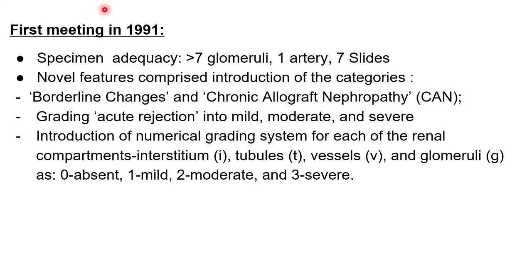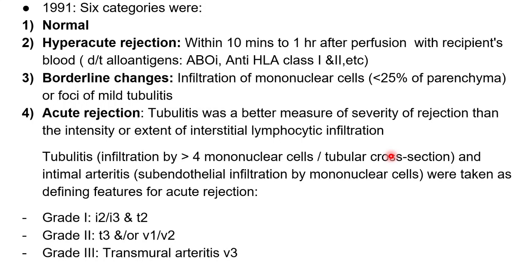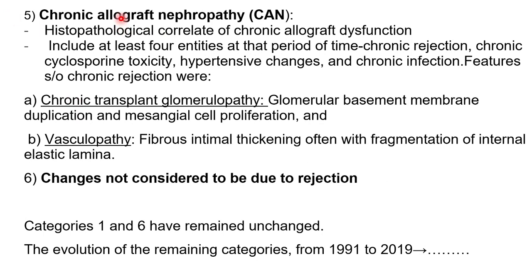Regarding the first Banff meeting, if you know the answers to these updates there is a high chance you will get a better score in the exam. Initially they specified more than seven glomeruli and one artery for adequacy, and grading of acute rejection as mild, moderate, and severe. In total there were six categories in 1991, including normal, hyperacute rejection, borderline, acute rejection, and chronic allograft nephropathy.